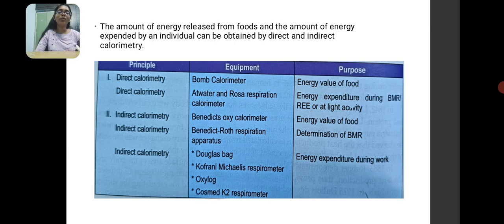The amount of energy released from food and how much energy a man expends can be obtained by direct and indirect calorimetry. Direct calorimetry uses equipment like the bomb calorimeter and Atwater and Rosa respiration calorimeter, which help in deriving the energy value of food and energy expenditure during basal metabolic rate.